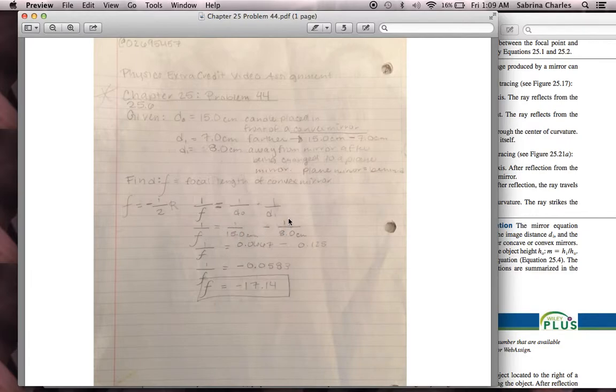minus 1 over the distance of the image, which is 8.0 centimeters. So, 1 over 15 ended up being 0.0667, and 1 over 8.0 ended up being 0.125. You subtract these two numbers, and you get negative 0.0583.